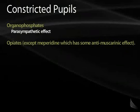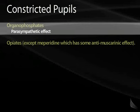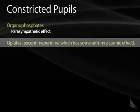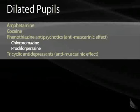For constricted pupils, you should think about organophosphates, which are cholinesterase inhibitors, and opiates. Meperidine is the one opiate which sometimes has an anti-muscarinic effect and can cause dilated pupils. For dilated pupils, you should think of amphetamines and cocaine, phenothiazine antipsychotics like chlorpromazine or prochlorperazine, and tricyclic antidepressants.